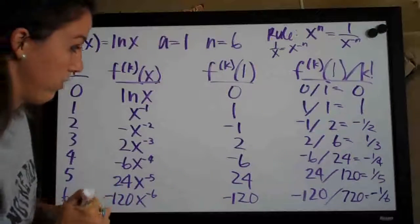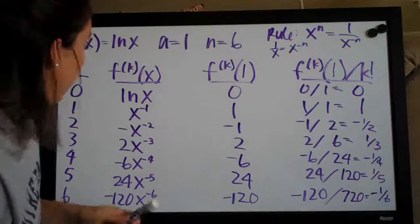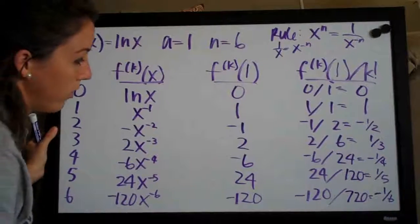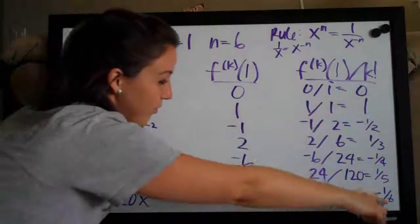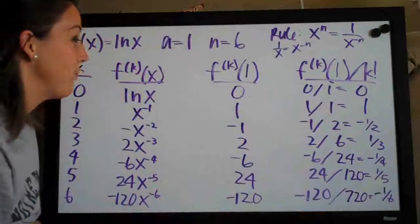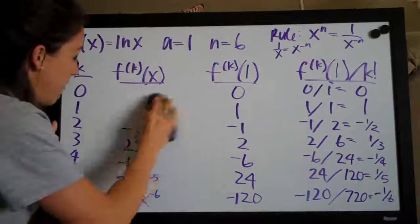So we can actually go ahead and erase everything in the middle. We construct this entire table for the sole purpose of finding these coefficients, right here. Once we've done that, we can actually erase everything in the center.